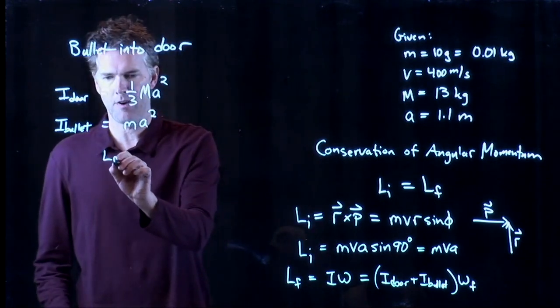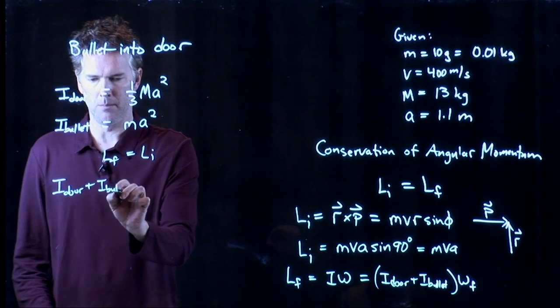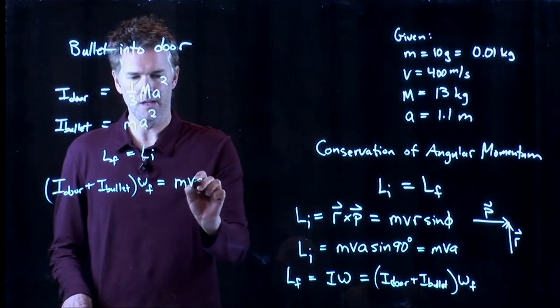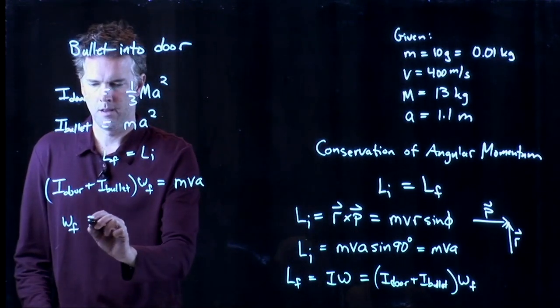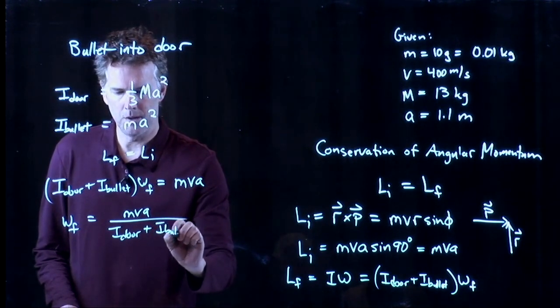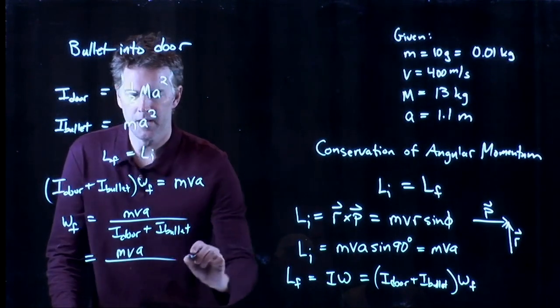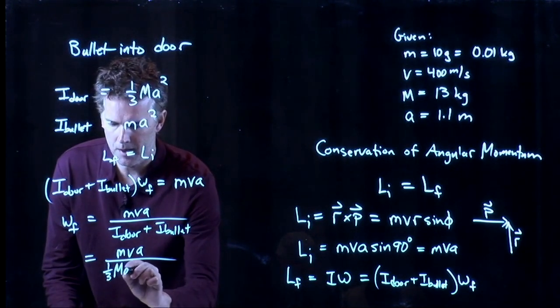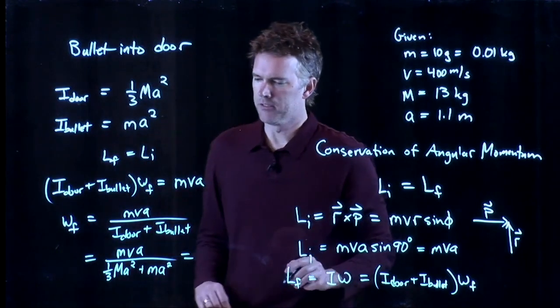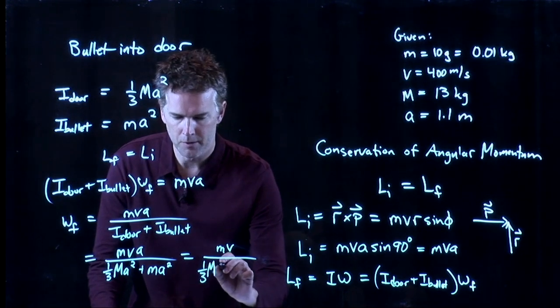And so now we can put all this stuff together. We have L final equals L initial. L final we just said was I door plus I bullet times omega final is going to equal L initial which is mva. I can now solve this for omega final. And I get mva divided by I door plus I bullet. And now I can put all that stuff in there for those I's. We have mva divided by I door which we said was one-third capital Ma squared plus I of the bullet which is little ma squared. And we can simplify this a little bit. We could cross out an a on the top and one of those a squareds on the bottom.